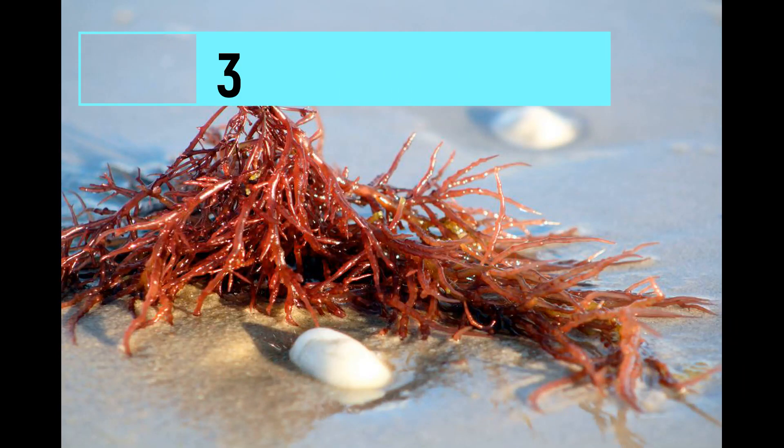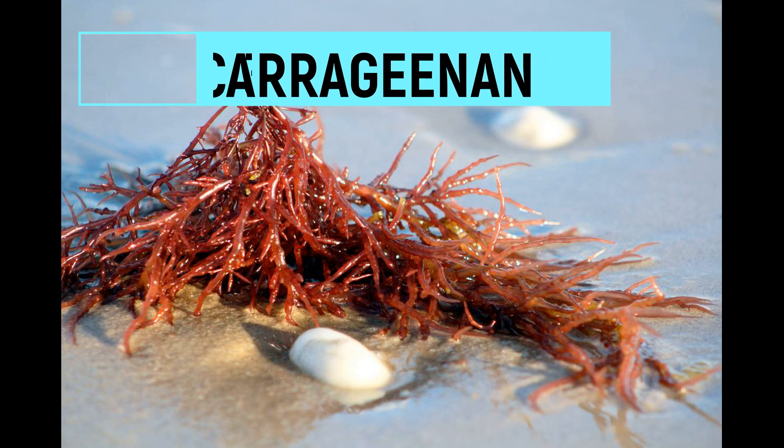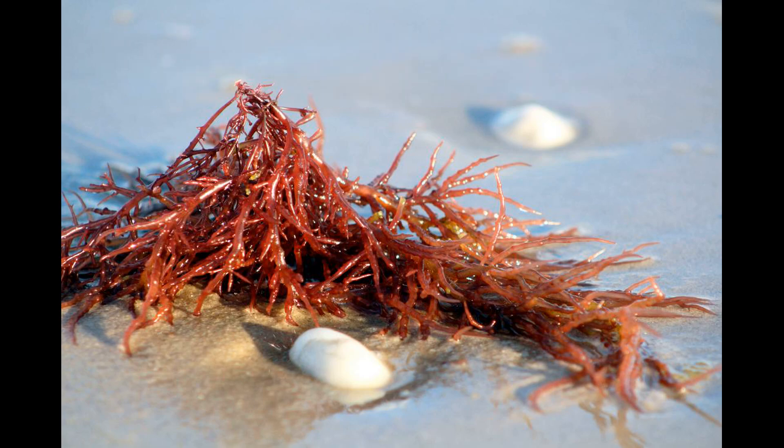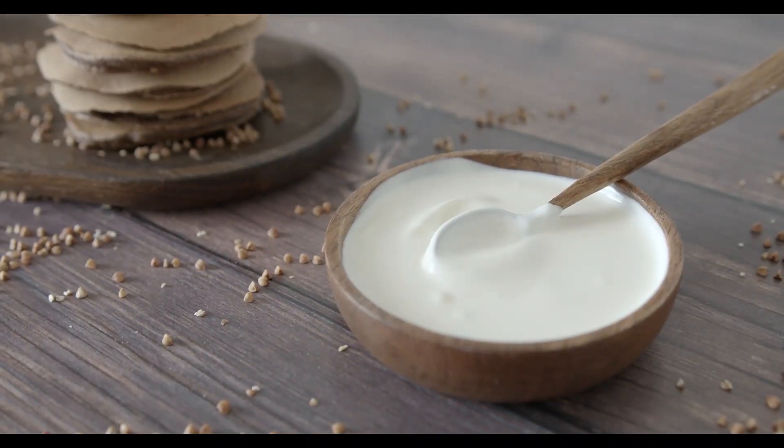Carrageenan is derived from red seaweed and is used as a thickener and stabilizer in dairy products, dessert sauces, and meat products.